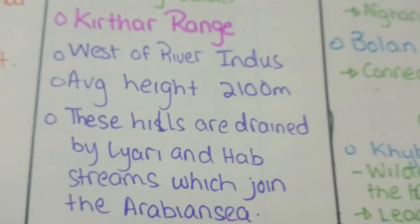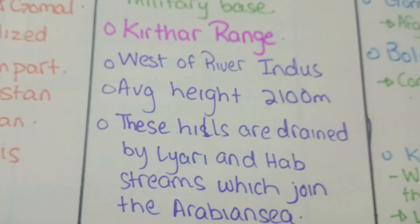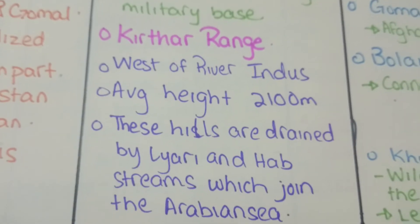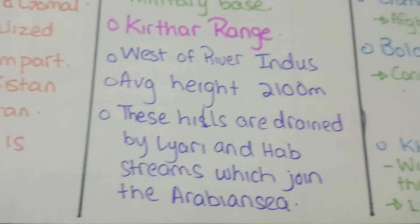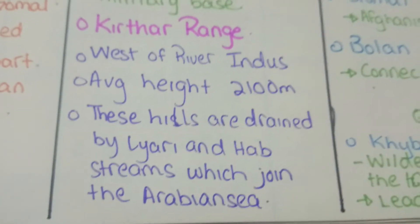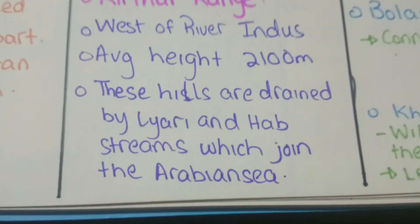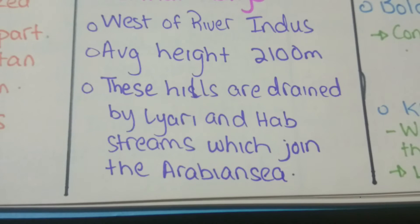The Keerthar Range lies west of the River Indus. The average height here is 2,100 meters. These hills are drained by the Lyari and Hub streams, which join the Arabian Sea.